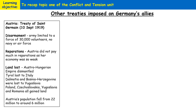Now let's quickly talk about some of the other treaties imposed on Germany's allies, as this is part of the specification for the Conflict and Tension unit. Starting with the Treaty of Saint-Germain, enforced on Austria on the 10th of September 1919. Austria's army was limited to 30,000 volunteers — they couldn't be conscripted. Austria did not pay much in reparations as the economy was so weak, and the League of Nations actually tried to give Austria some help in 1921 to strengthen its economy.